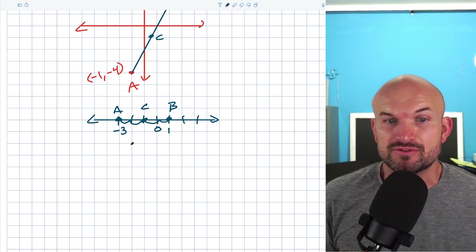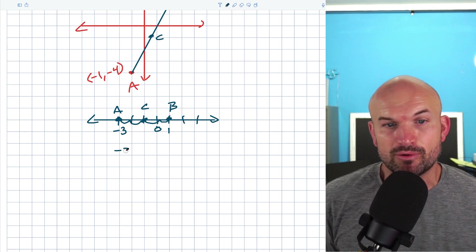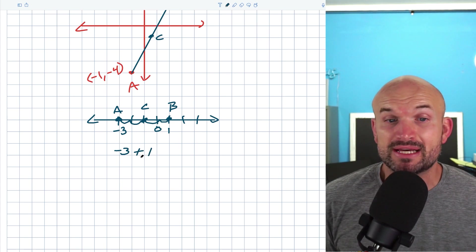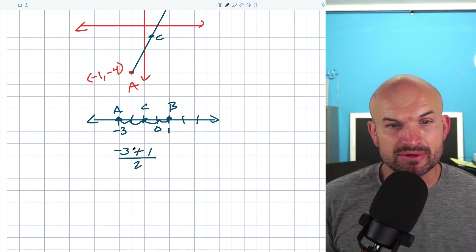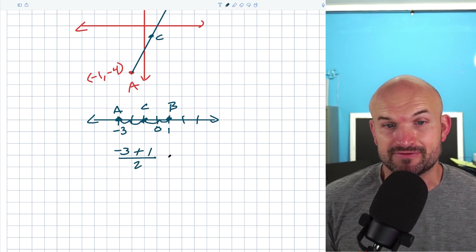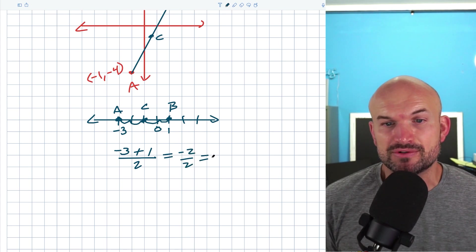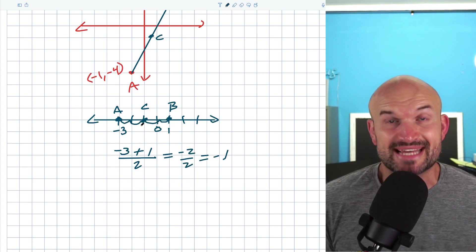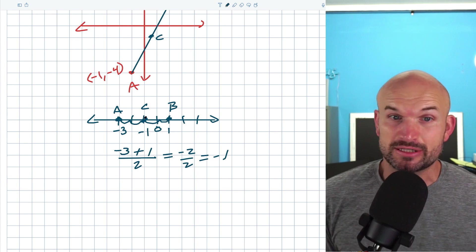Now, a way mathematically for us to find that is we could simply just take our two points, so negative three and one, and we could add them and then divide by two. And if we did that, we get negative three plus one is negative two, negative two divided by two, which equals negative one, which again, if you look at the scaling that I provided, you can see that C is equal to negative one.